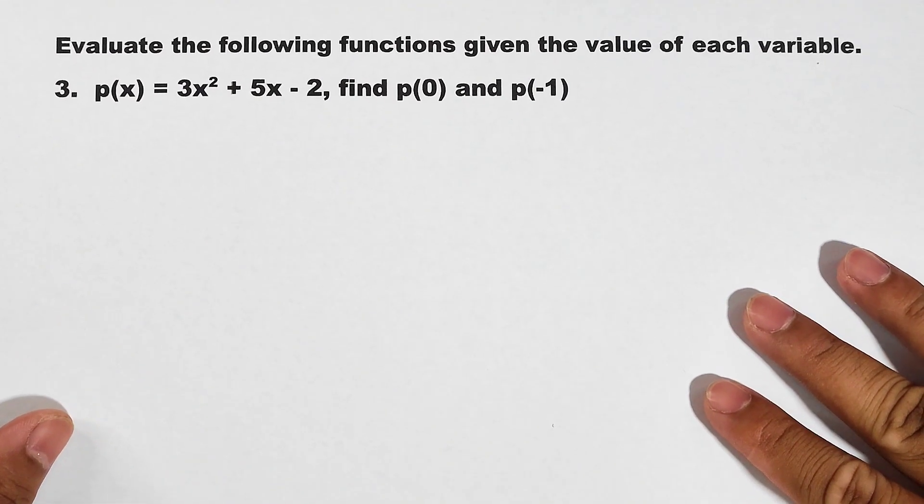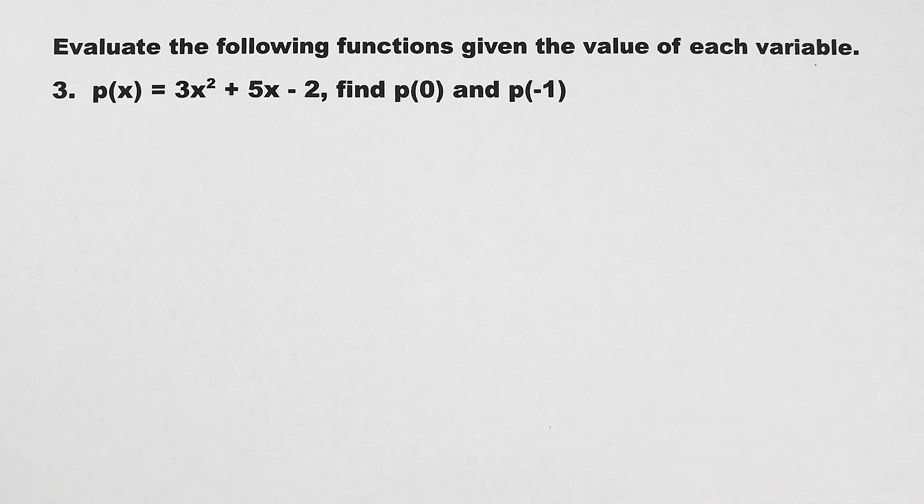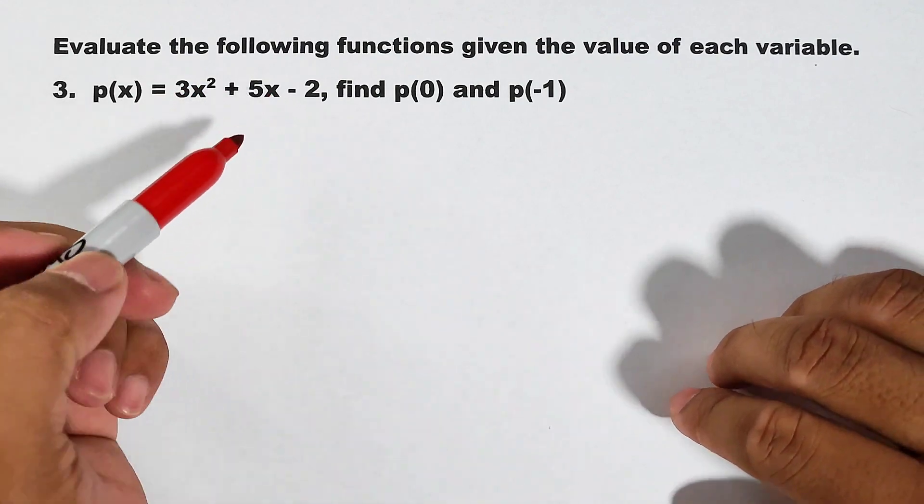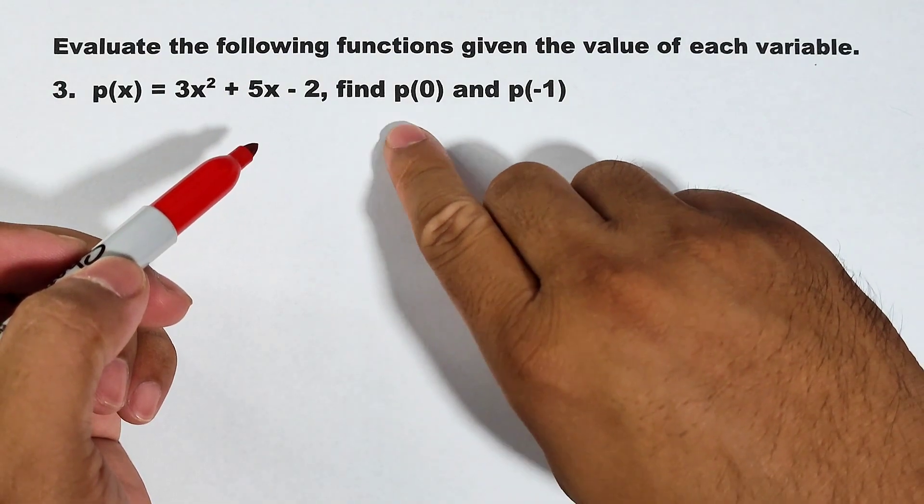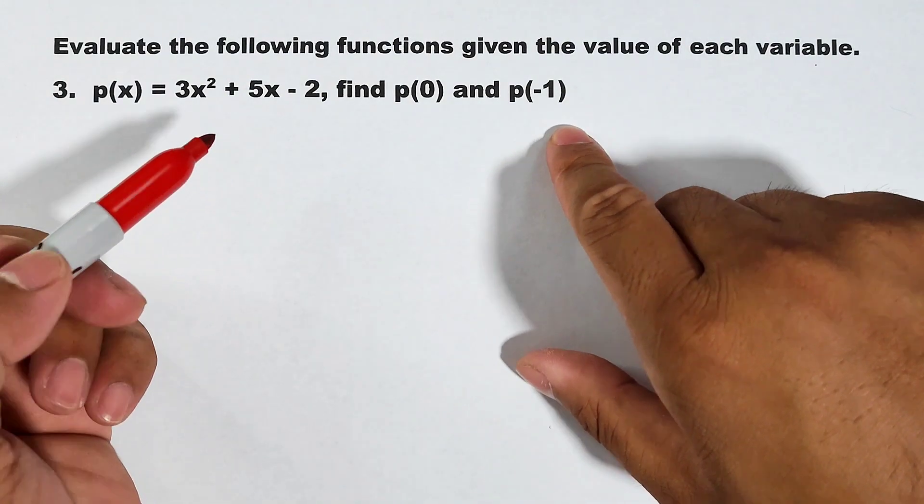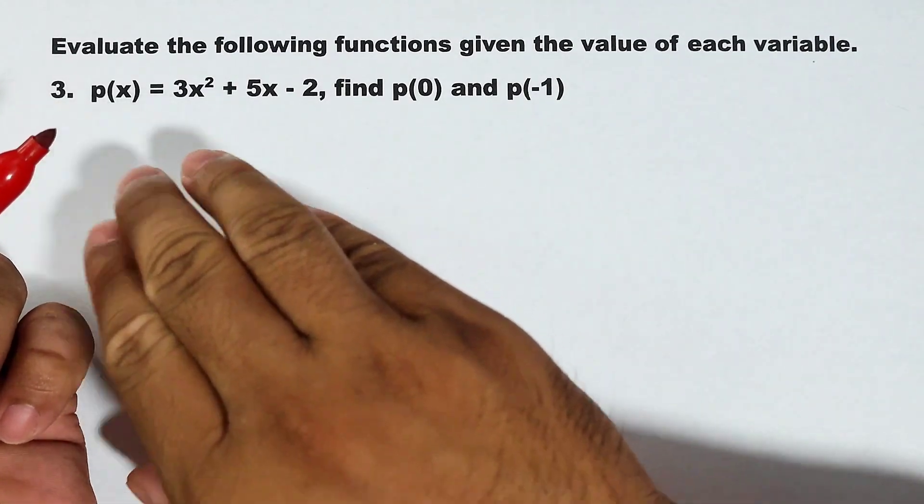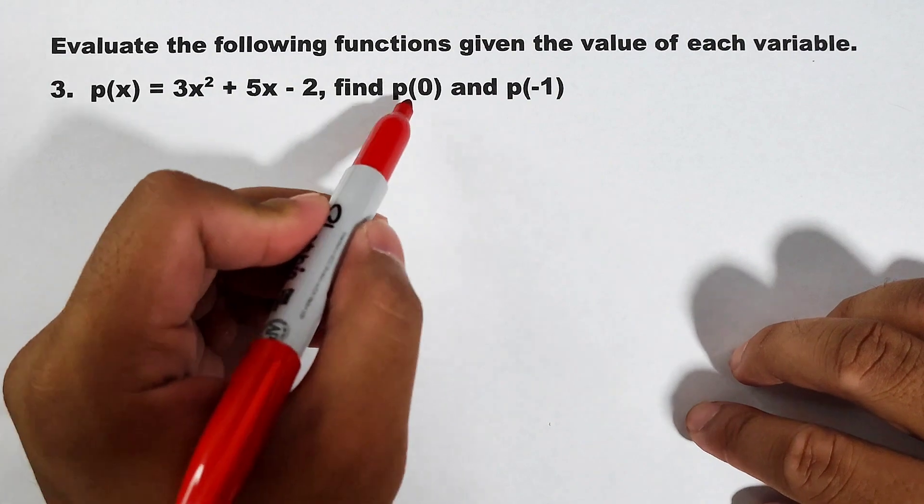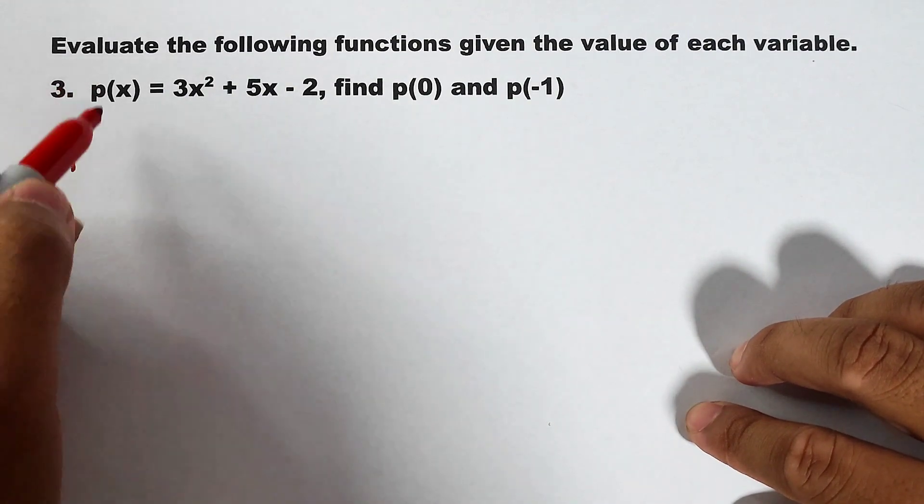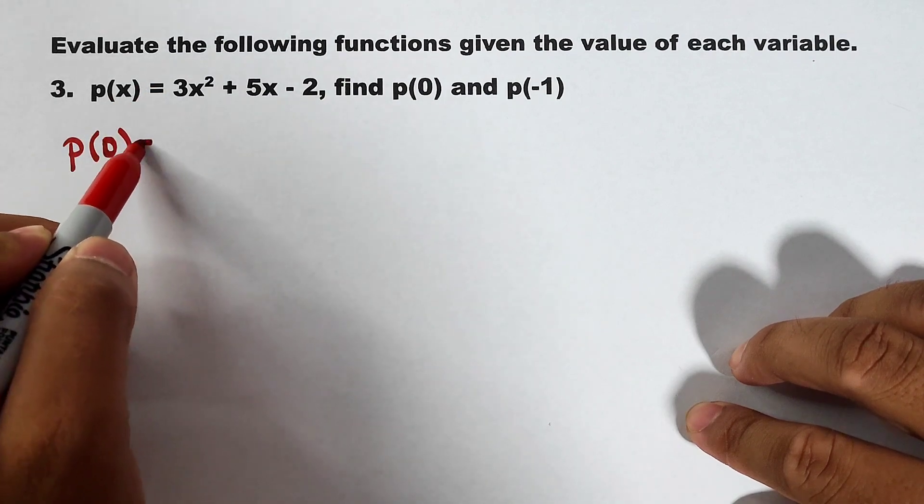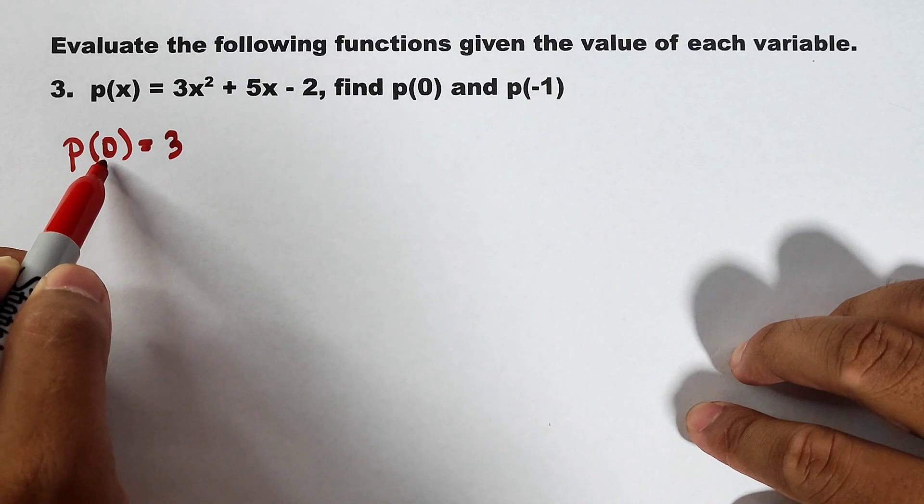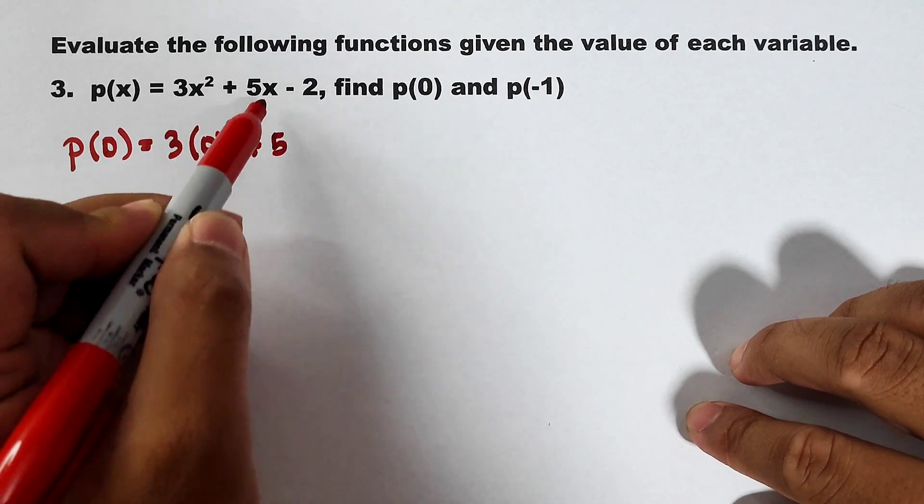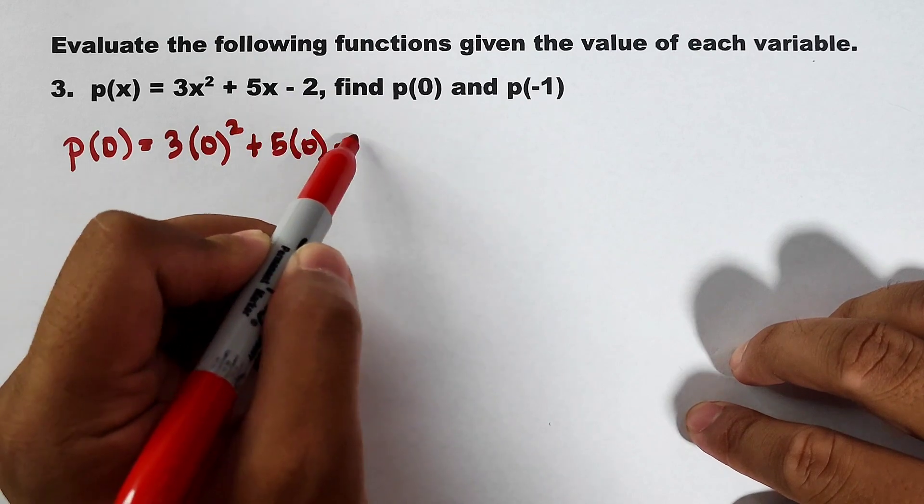Now, let's move on with another example. Now, we have the function p. So what we have here is p of x, 3x squared plus 5x minus 2. But in this case, we are asked to find p of 0 and p of negative 1. We are given a single function and we need to evaluate it twice using 0 and negative 1 as our input. So let's start with p of 0. For p of 0, what you need to do is to copy 3. Then this x will be replaced by 0. 3 times 0 squared plus 5 times 0 minus 2.